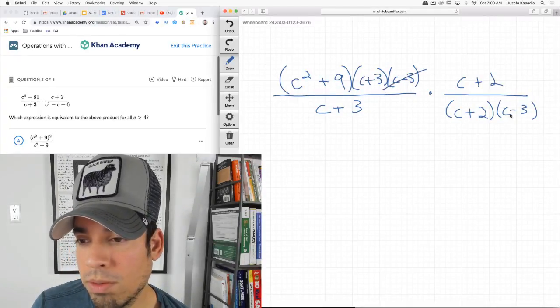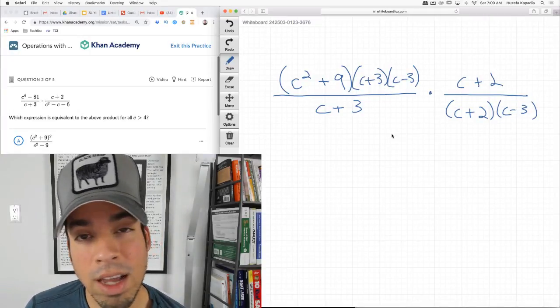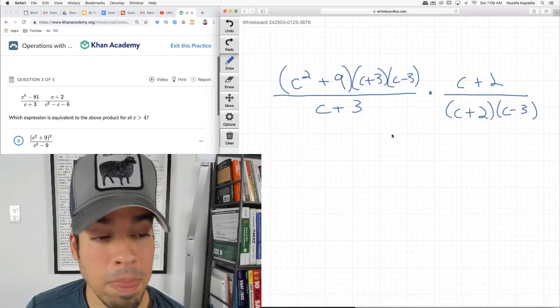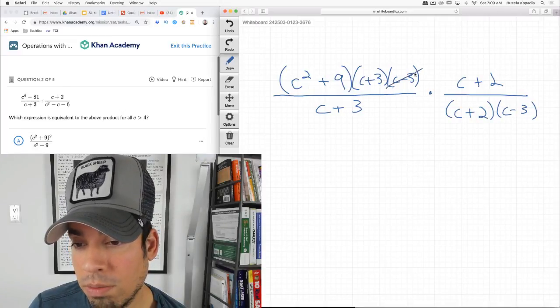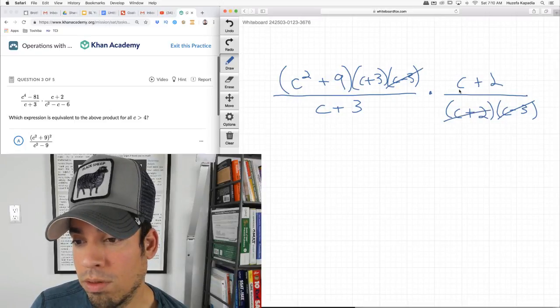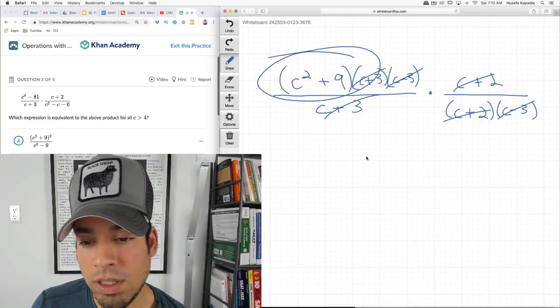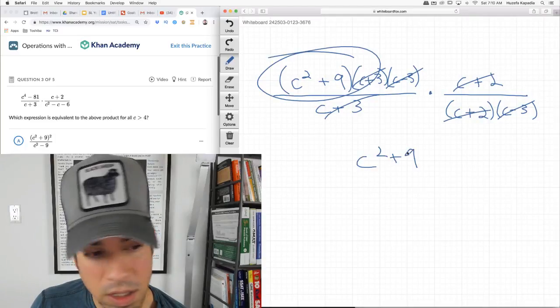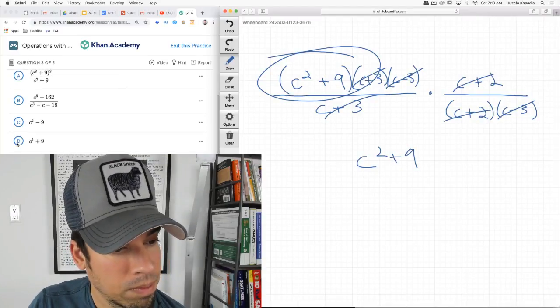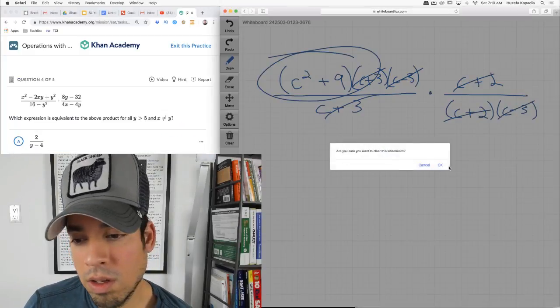Now look, I can do this because these are all multiplying each other. I don't need a common denominator or anything. Multiplication, you don't have to worry about that. So now I can cancel everything out. There's our answer: c squared plus 9.